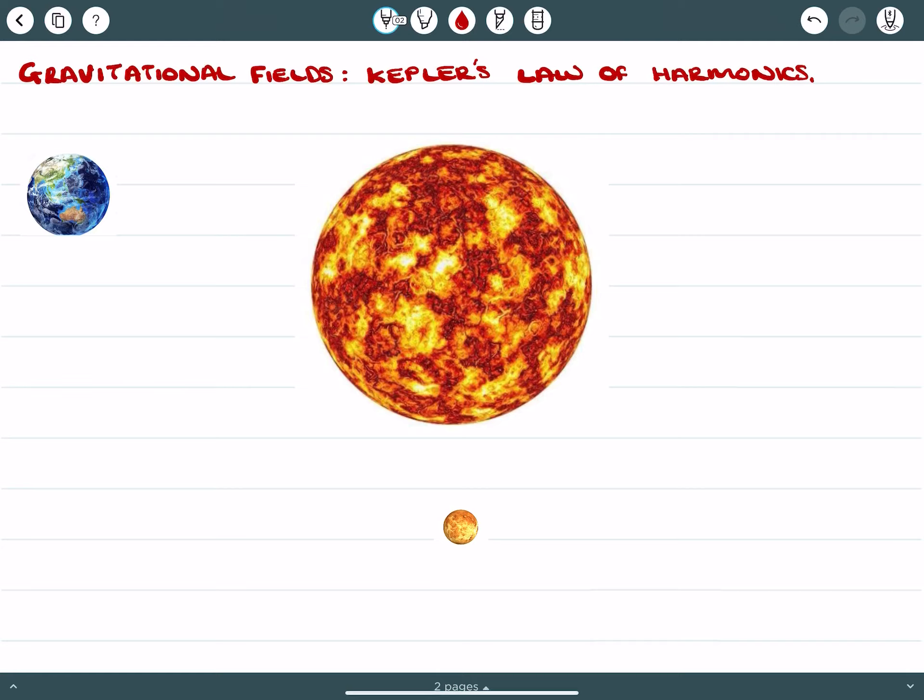We're going to look at Earth and Venus moving around the Sun. So we have the Sun here, this is what I'm calling Earth, and this planet here which is closer to the Sun but a lot smaller is Venus.